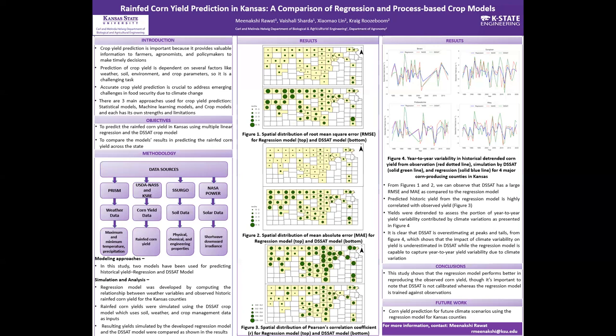Therefore, this study concludes that the regression model performs better in reproducing the observed corn yield, though it is important to note that DSSAT is not calibrated whereas the regression model is trained against observations. Future work includes rain-fed corn yield prediction for future climate scenarios using the regression model for Kansas counties. Thank you for listening to my presentation.